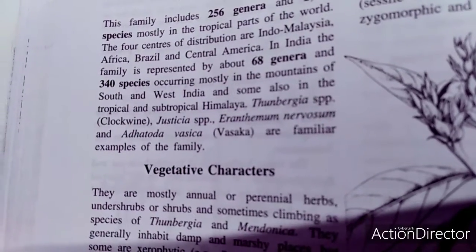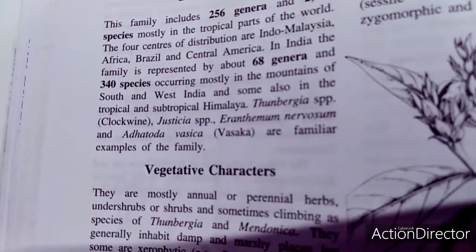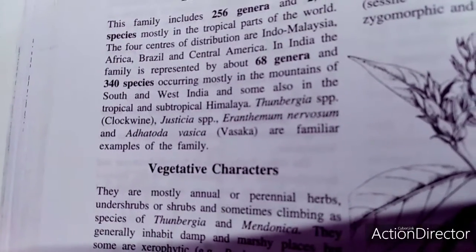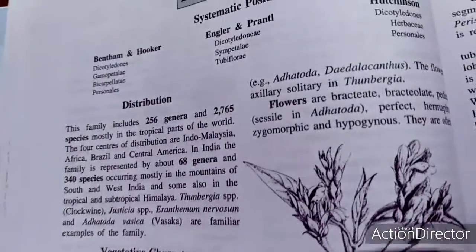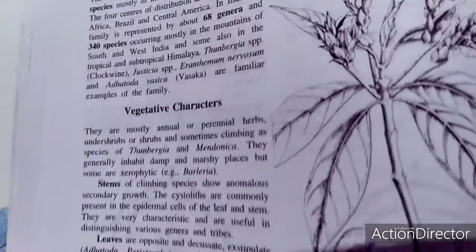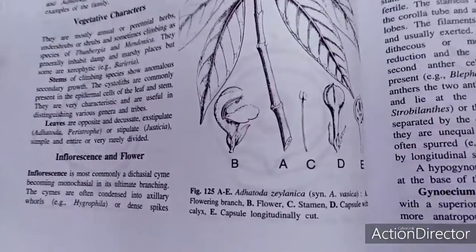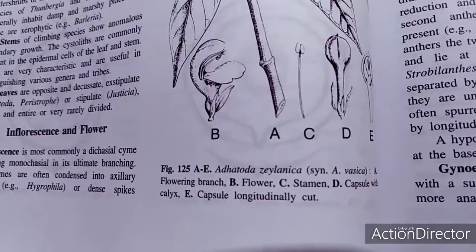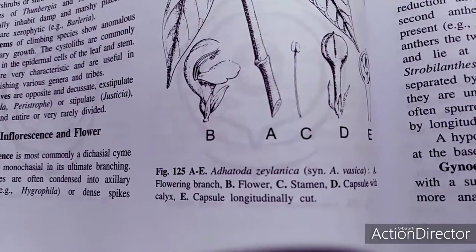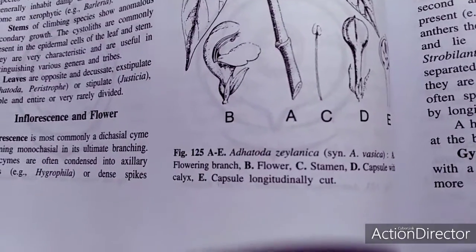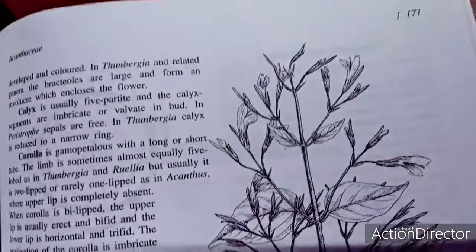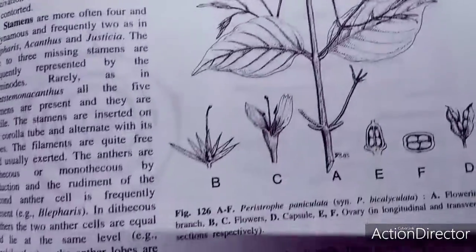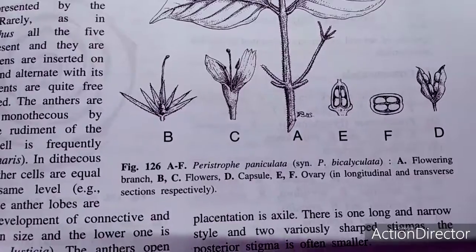The best examples include Thunbergia species, known as the clock vine, and Justicia adhatoda, also known as vasaka. This structure shows Adhatoda zeylanica. In the floral diagram, the flower arrangement, stamens, carpels, and longitudinal sections are also shown. Another plant belonging to this family is Peristrophe.